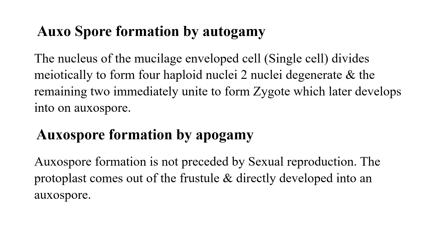In diatoms, auxospore formation also takes place by autogamy — a different type of reproduction. Only one single cell participates. The nucleus divides meiotically to form four haploid nuclei. Out of the four, two degenerate and the remaining two behave as male and female gametes and fuse to give rise to a zygote, which later develops into an auxospore and germinates to give rise to a diploid diatom cell.